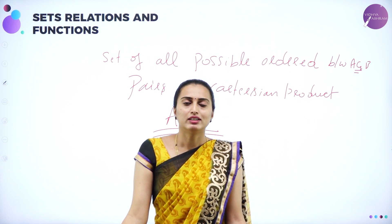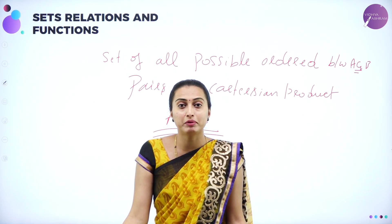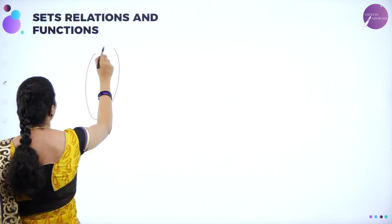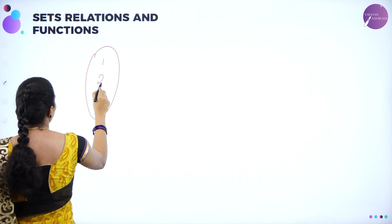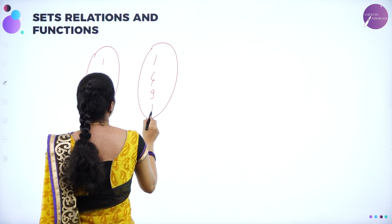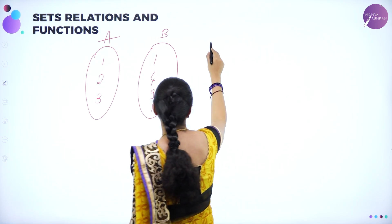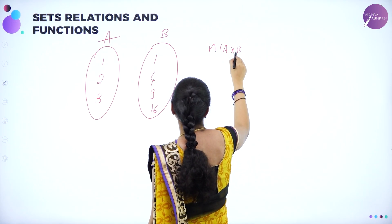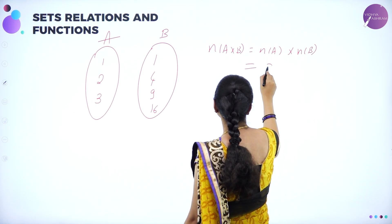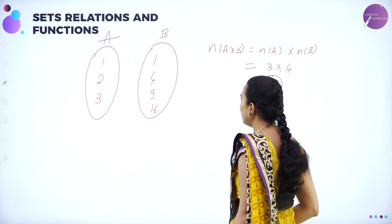Now what do we mean by a relation? A relation is nothing but a subset of the Cartesian product. Let me take an example to explain. Set A has elements 1, 2, and 3. Set B has elements 1, 4, 9, and 16. What is A cross B? It is all ordered pairs - the number of A elements is 3 cross number of B elements is 4, giving 12 ordered pairs in A cross B.